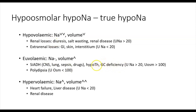In all of these euvolemic conditions, urine osmolality will be elevated above 100 milliosmoles per kilogram — and in the case of SIADH, usually several hundred. Urine sodium is more than 20 millimoles per liter in all these conditions because there's no significant intravascular volume depletion and the renin-angiotensin-aldosterone system is not particularly activated, so there's no impetus to reabsorb sodium. Additionally, the increased ADH action leads to more free water reabsorption, which concentrates solutes in the urine, leading to a higher urine sodium concentration.